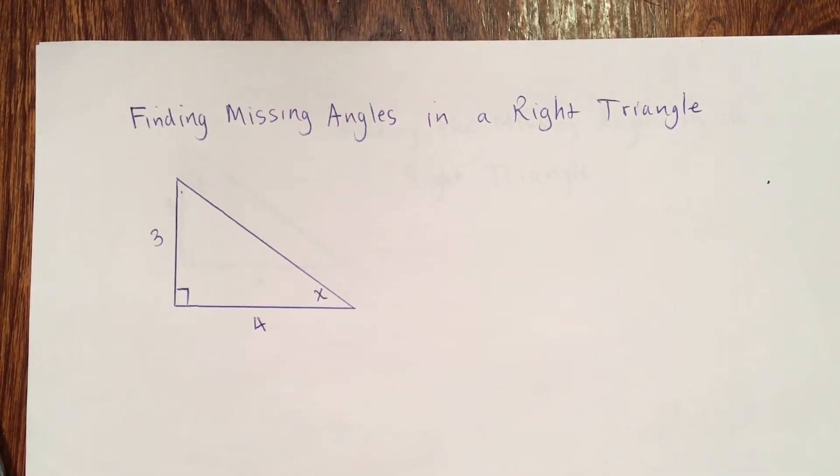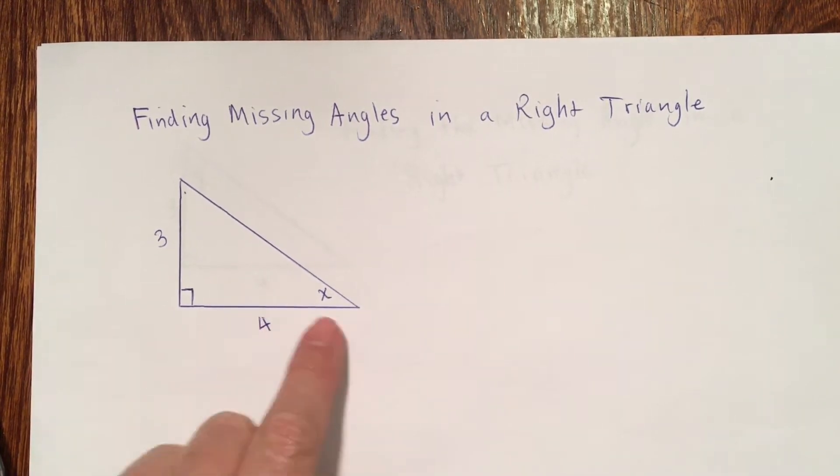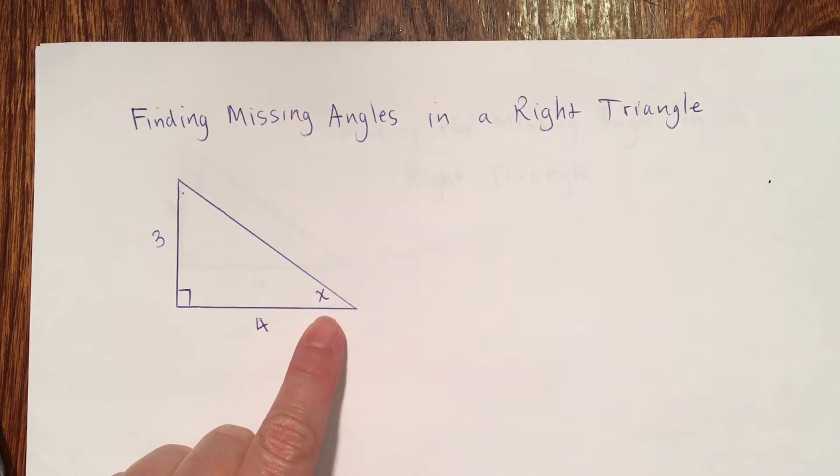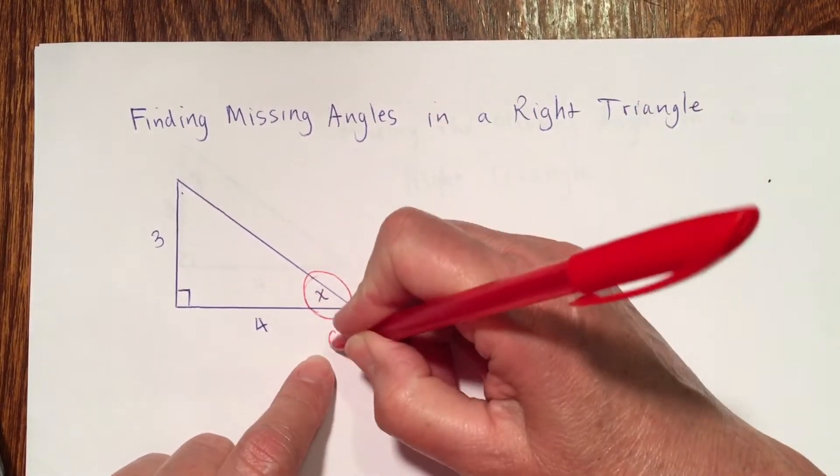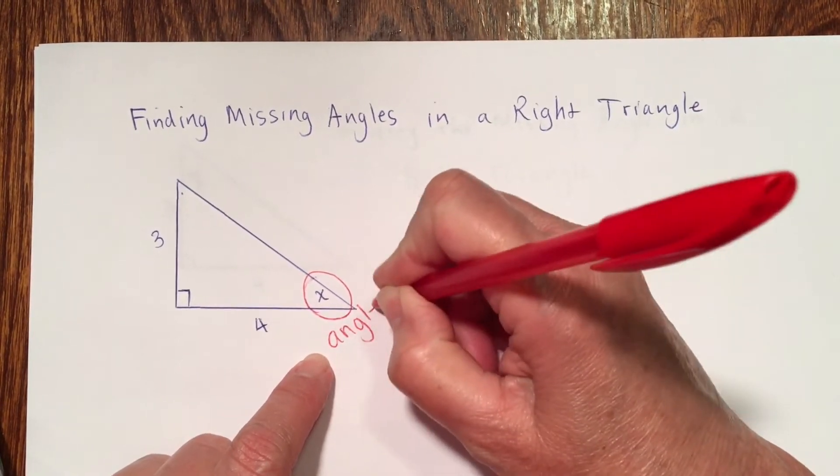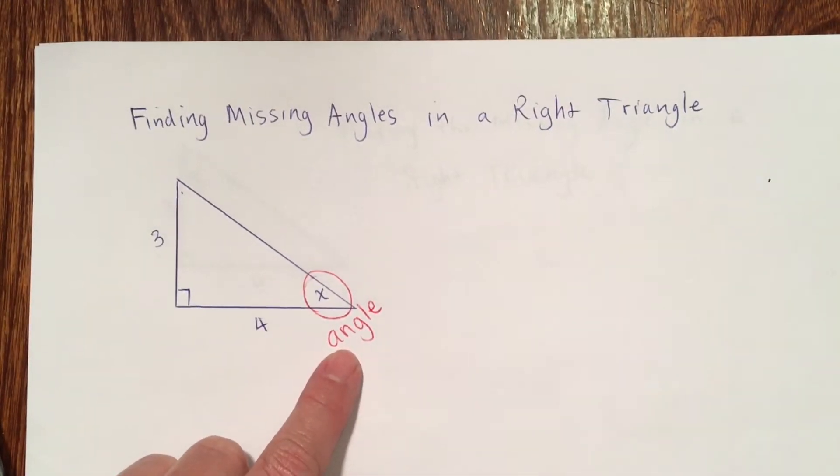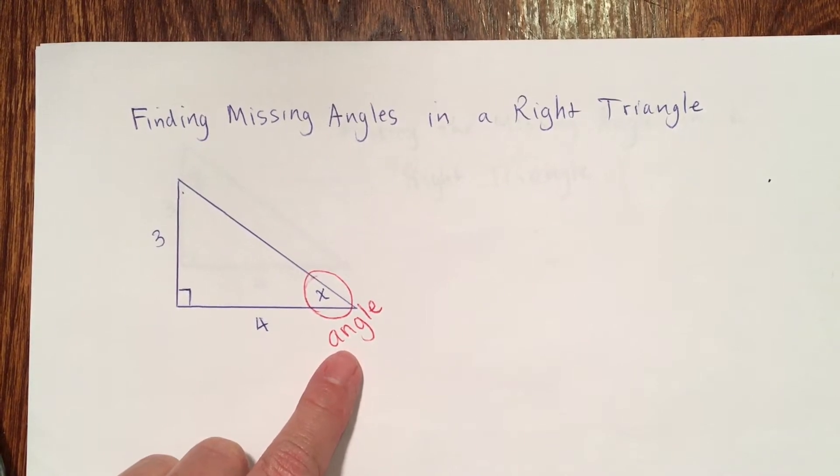This video is about finding missing angles in a right triangle. Here's an example. I want to find the value of x that's in the picture. As I look at angle x, in fact I'm going to circle that and make a little note. That is an angle, angle x. x is the measure of that angle.